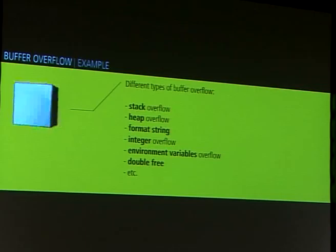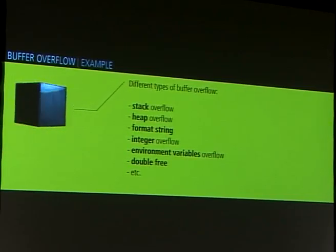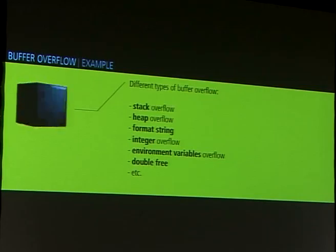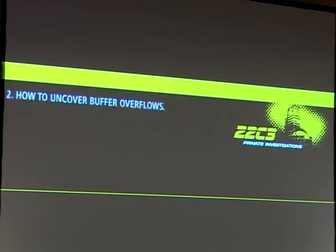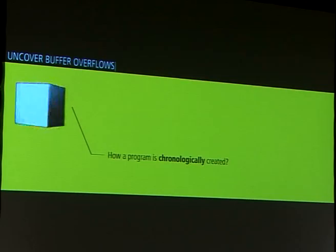In practice, when you want to take control of a process, the idea is just to jump to a part of the memory you control and where there is what we call a shellcode — for example, to give you a backdoor or something else. There are different types of buffer overflows. We have seen here the basics, the classic case of stack overflow. You also have heap overflow, format string, integer overflow, and other types.